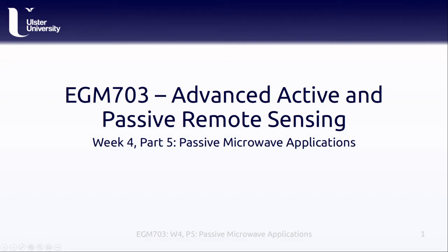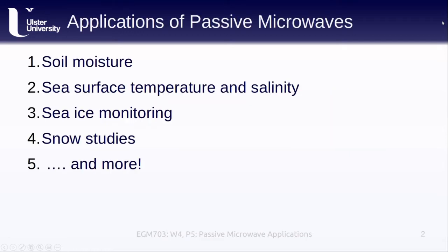Hello and welcome to week 4 part 5 of EGM 703, applications of passive microwave remote sensing. In this lesson we'll learn about different scientific applications of passive microwave remote sensing. We'll look at examples of how passive microwave remote sensing can be used to study soil moisture, sea surface temperature and salinity, sea ice, and different types of snow studies. As always, these are not the only applications out there, but a small selection.